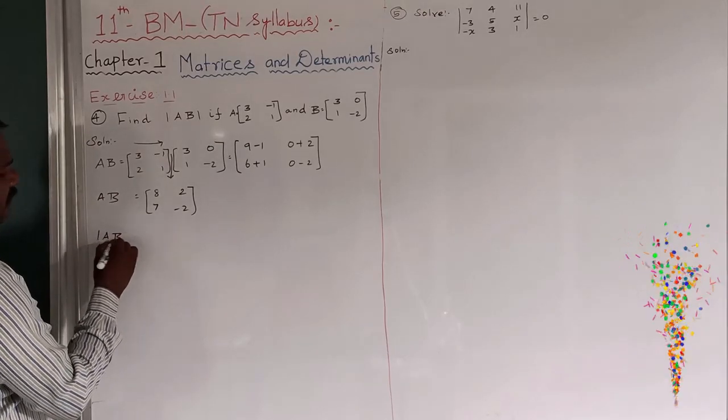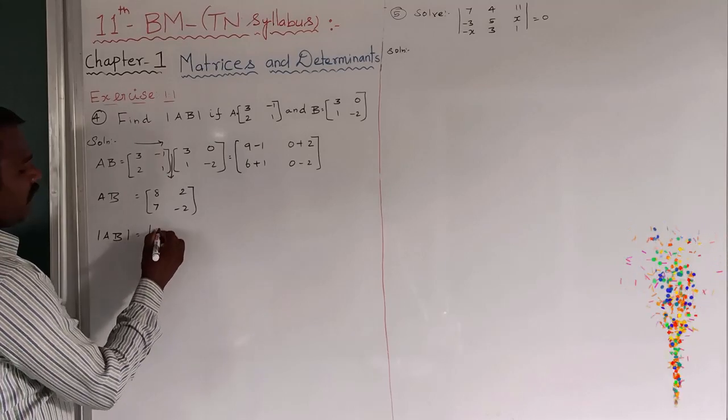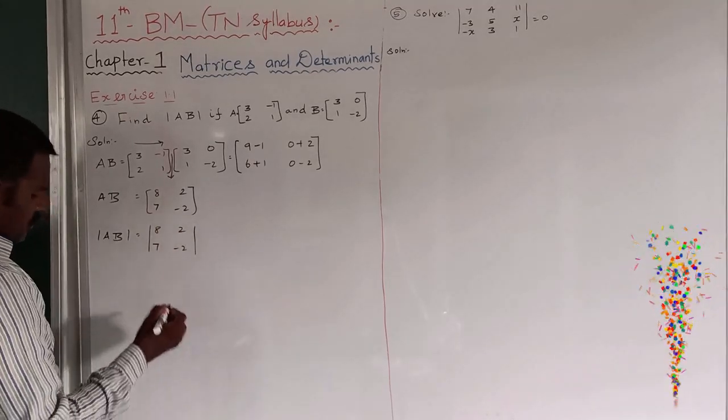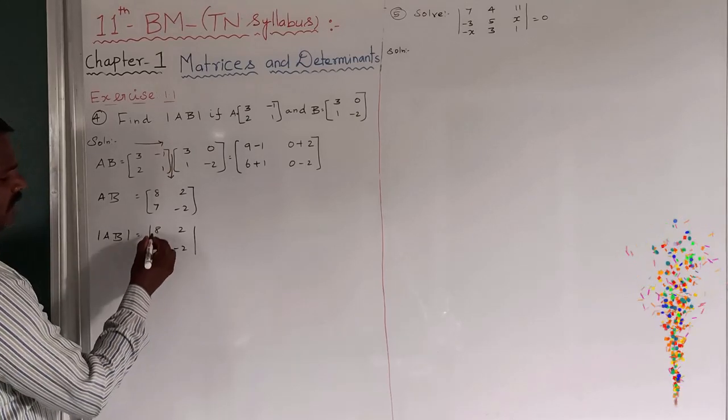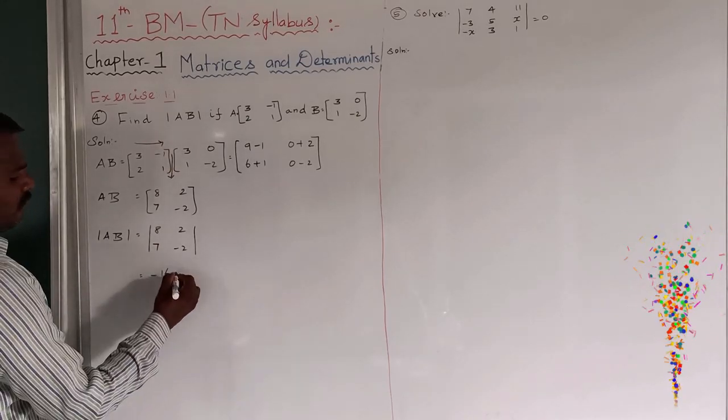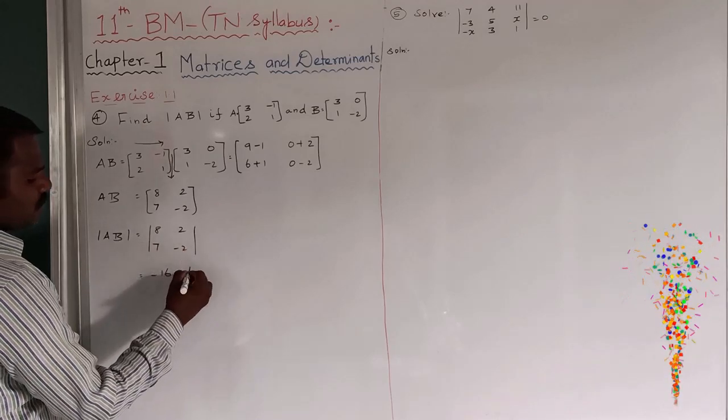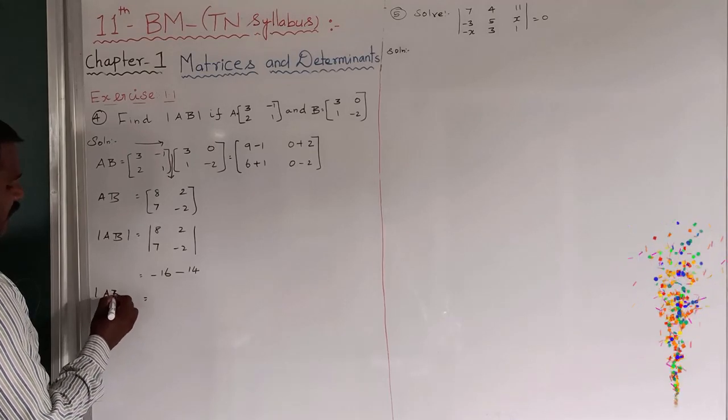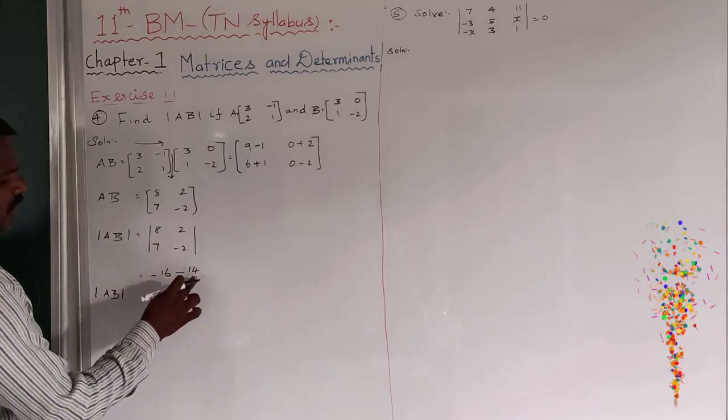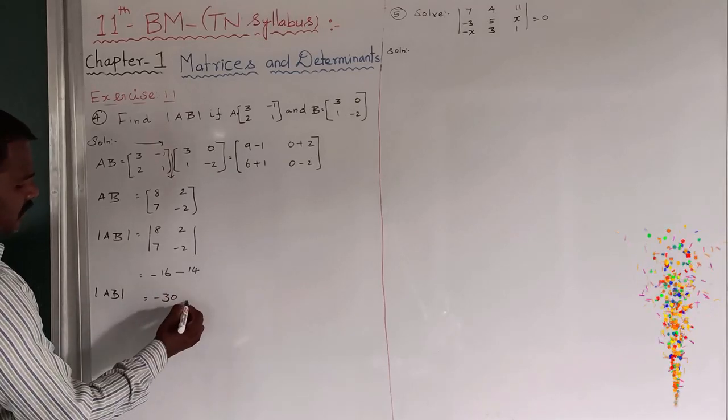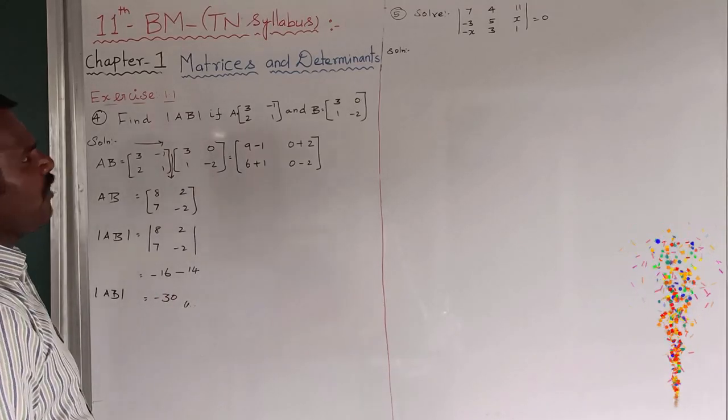So, modulus of AB. That means the determinant of AB. 8, 2, 7, minus 2. So, this is equal to, the evaluation is 8 twos are 16. Minus 16. Minus the product of these two terms. 7 twos are 14. Therefore, the modulus of AB, that is the determinant of AB, 16 minus 14, minus 30. This is the answer of modulus of AB.